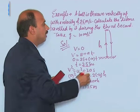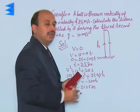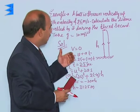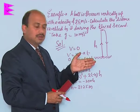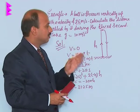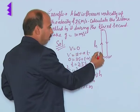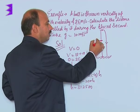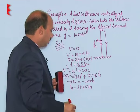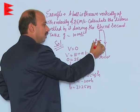Now you have to calculate distance travelled in the third second, which means distance travelled between 2 seconds and 3 seconds. Suppose the body reaches point A after 2 seconds. How much is this height we can calculate?